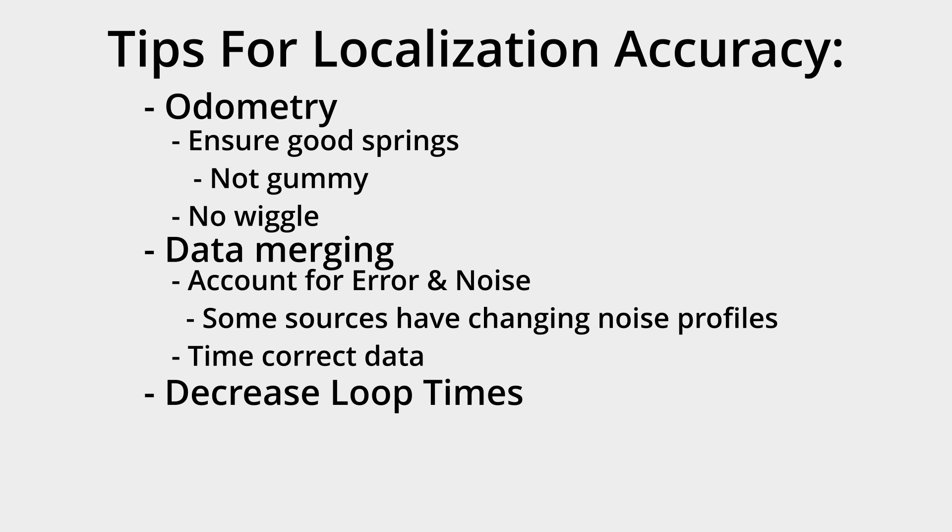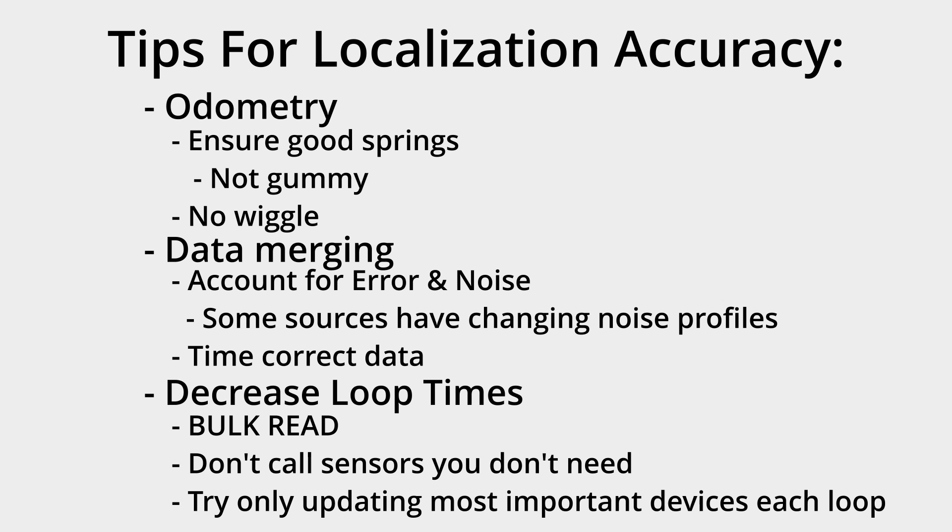Decrease loop times. This can be done by simply bulk reading and only calling hardware one time per loop. If you have any sensors that you aren't actively using, don't call them, and if you don't need data from them every loop, try only calling them once every 100 milliseconds. Or, if you want to be fancy, you can implement a system like the priority queue that the Clueless uses.